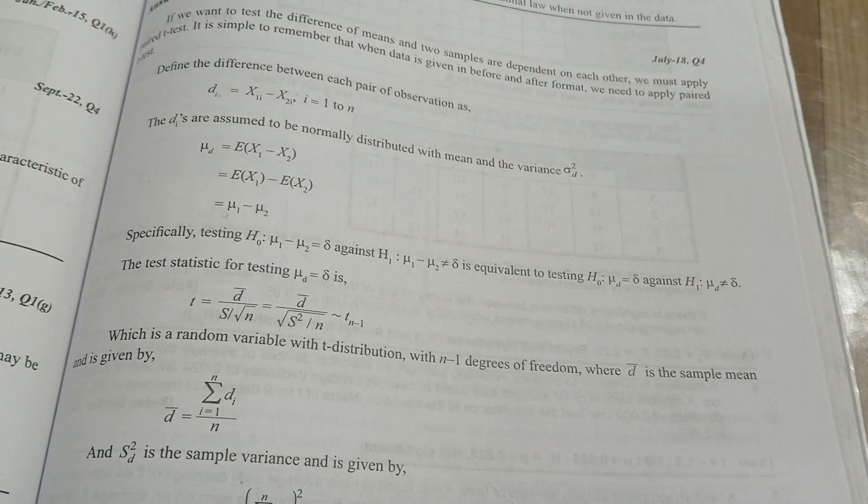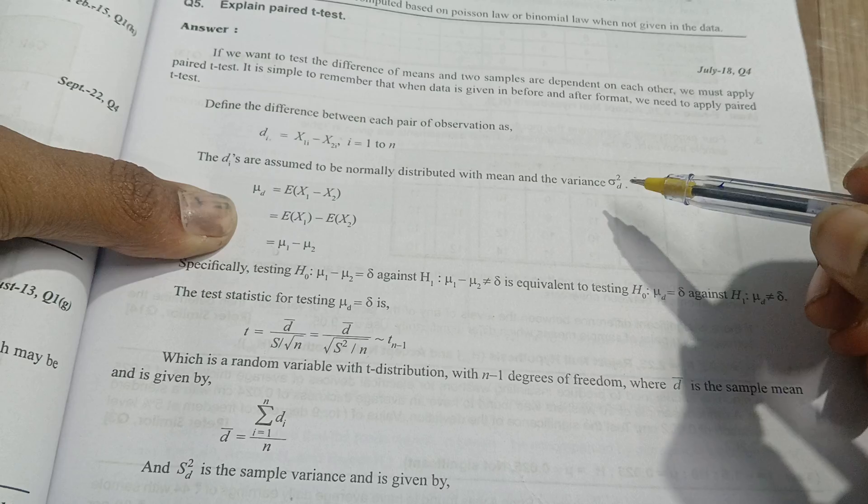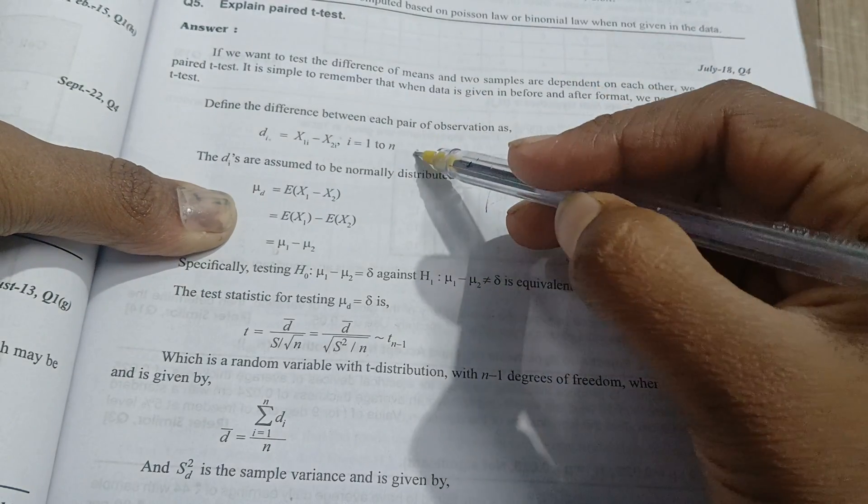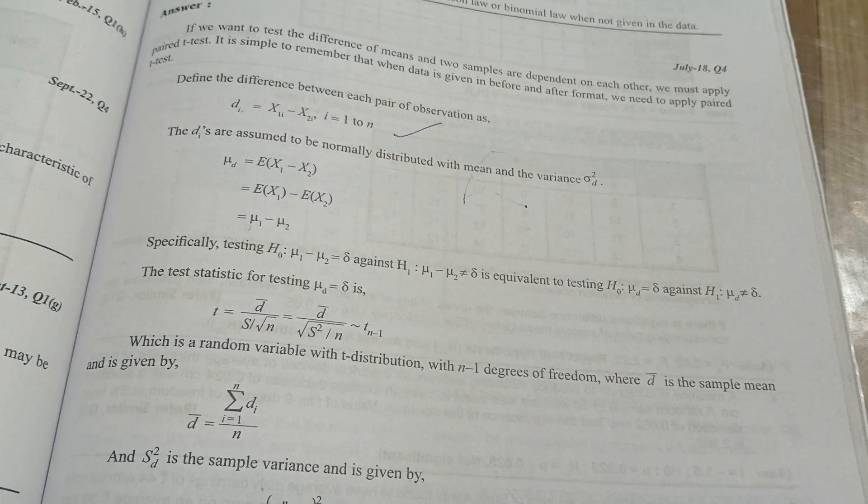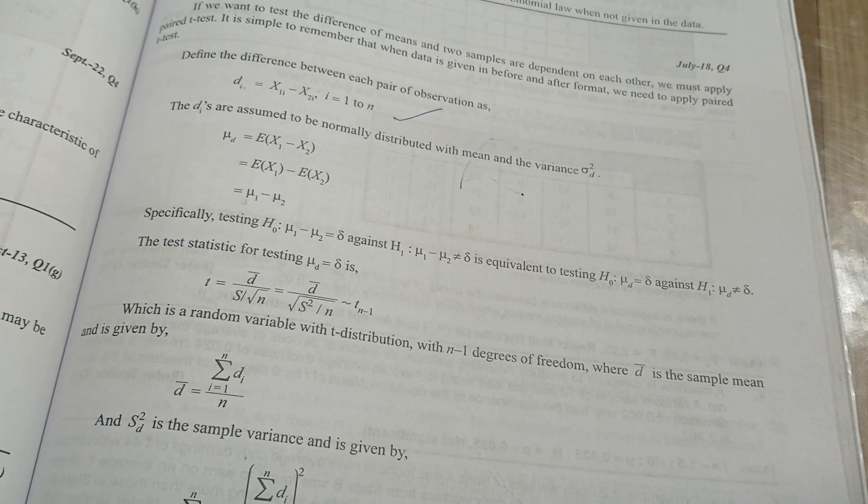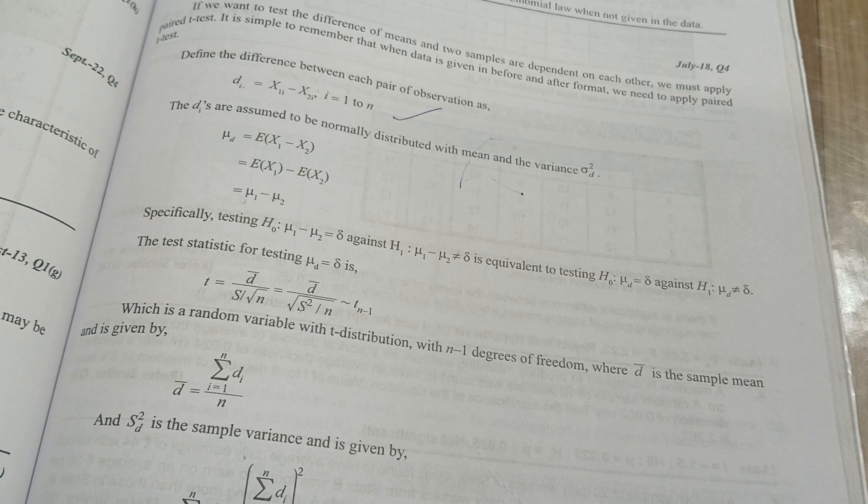The last important question is paired t-test. For this paired t-test, you need to remember the formulas. Each pair difference formula is important, and if you remember and write any one formula in your examination, it will be okay. Unit 4 is full of formulas you need to learn at any cost.